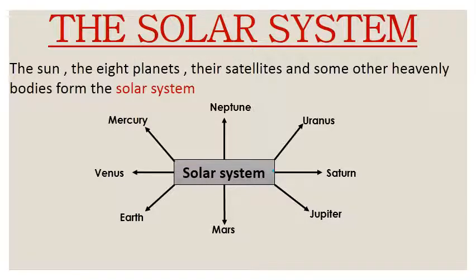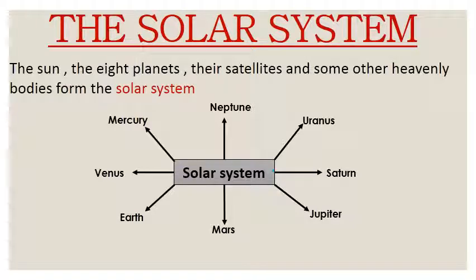Is mein planets hote hain: Mercury, Venus, Earth, Mars, Jupiter, Saturn, Uranus and Neptune. These all are the 8 planets which are present in the solar system.